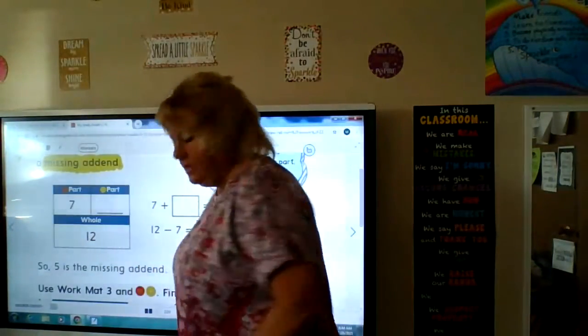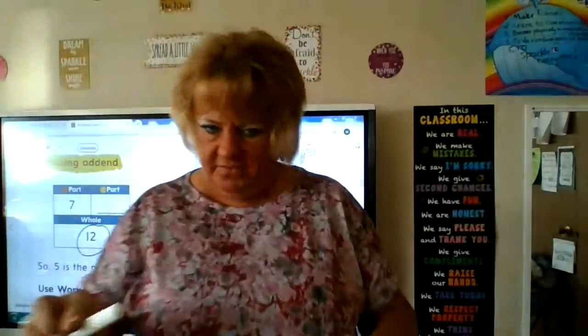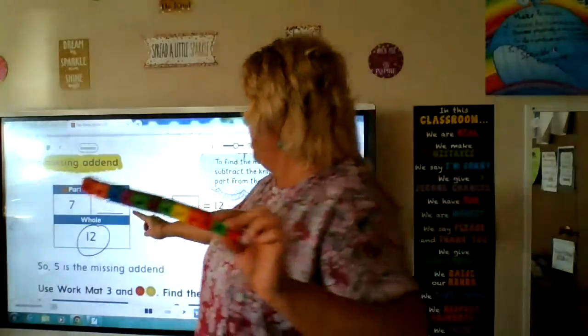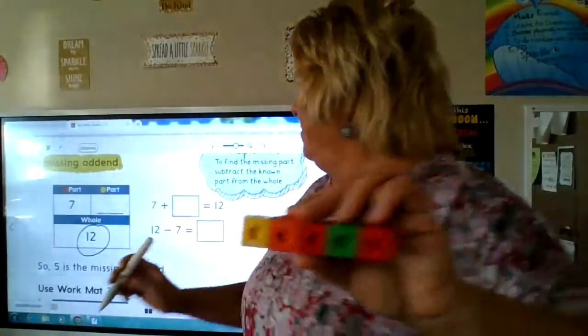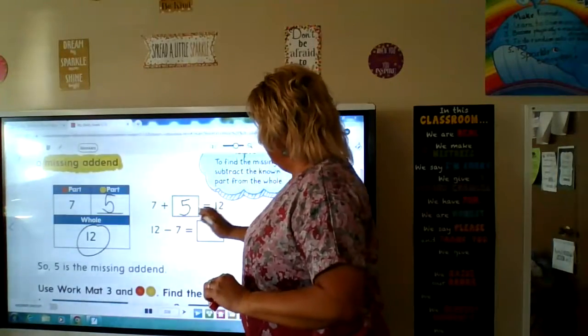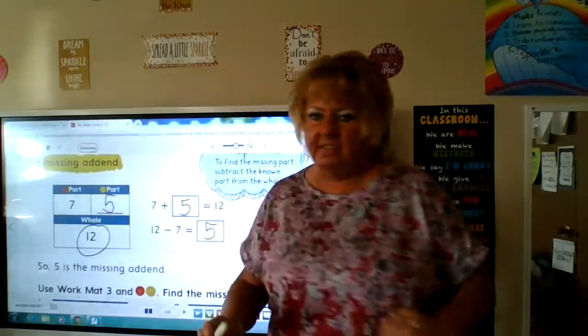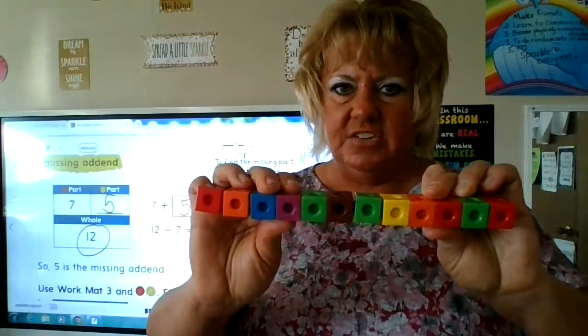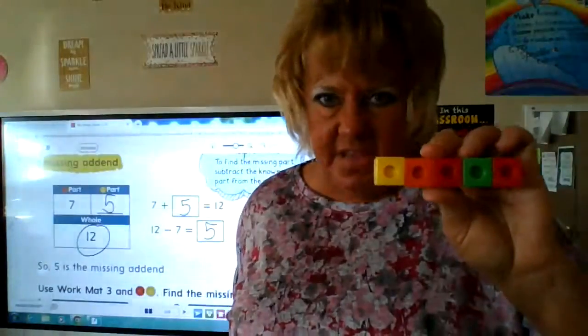Now the whole is 12. Find 12 blocks: 1, 2, 3, 4, 5, 6, 7, 8, 9, 10, 11, 12. We know one part is seven, so we take away seven: 1, 2, 3, 4, 5, 6, 7 — and we have five left. The parts of 12 are 7 and 5. So 7 plus 5 equals 12 (that's part-part-whole, addition), and 12 minus 7 equals 5 (that's whole-part-part, subtraction).